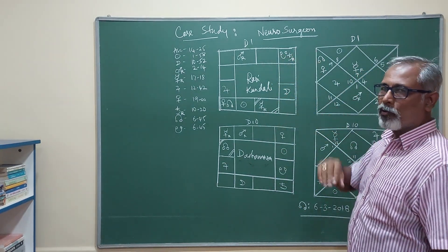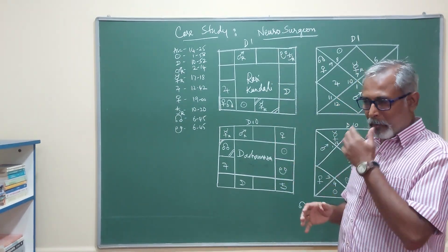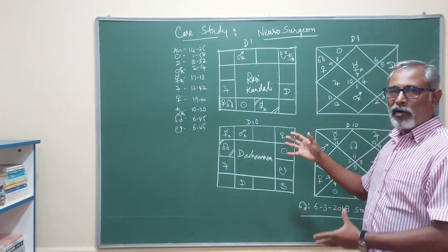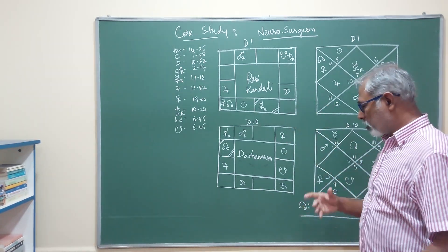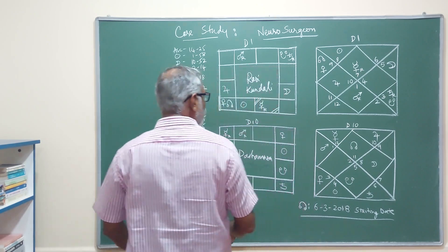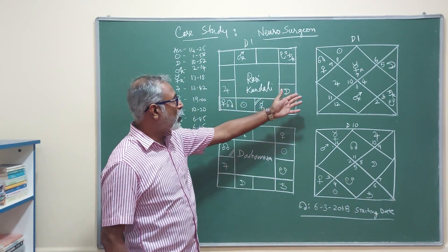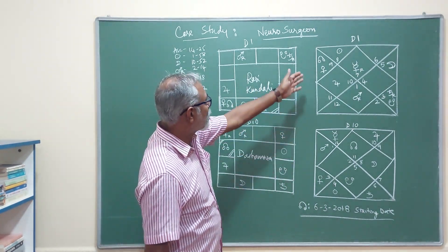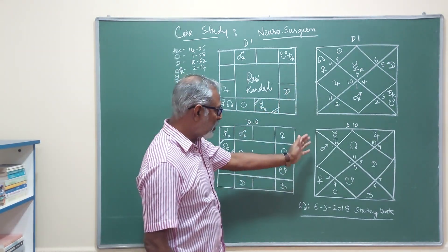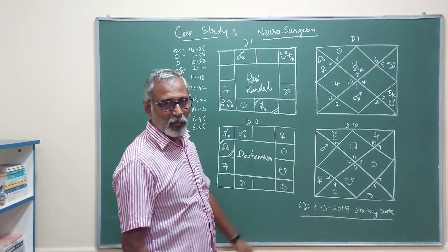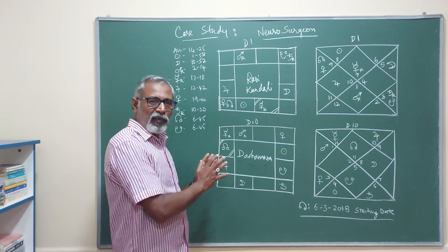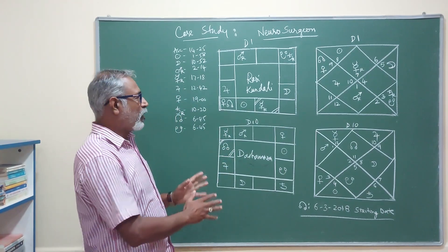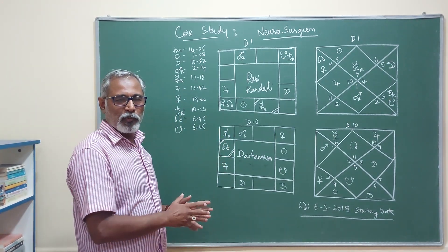This case study is about a neurosurgeon, a male. I am not giving birth details because it's already jumbled up. I have put up the North Indian chart for people who want it. This is the D1, the Rashi Kundali. This is the D10, the Dashamsha Kundali.